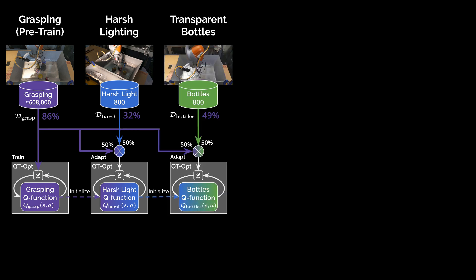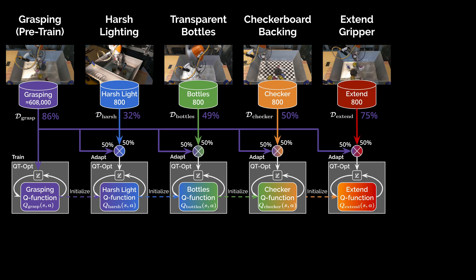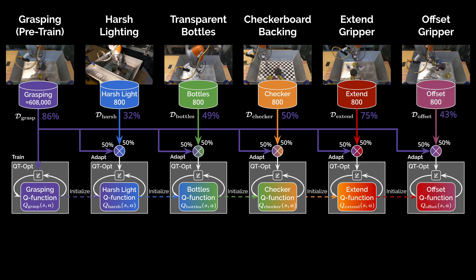We use the Q function from the first iteration of fine-tuning to initialize a new iteration, this time on a different task variation. Then we do it again, and again, and again, until we visited all five variations in the study.